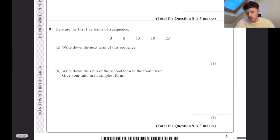Here are the first five terms of a sequence. Write down the next term. You can see we're increasing by five every time, so it's going to be 28. Write down the ratio of the second term to the fourth term. Second term is eight, fourth term is 18. Simplest form, just like a fraction, we divide both sides by the same thing. So we can divide both by two to get four and nine.